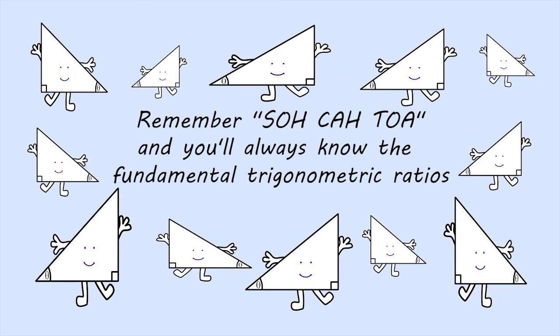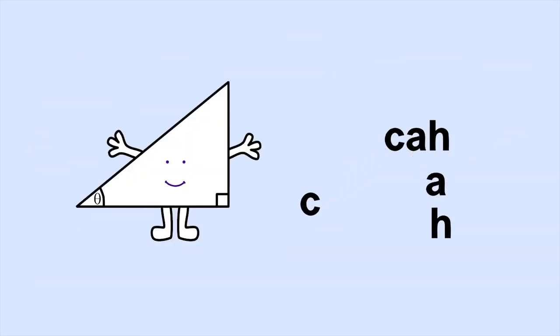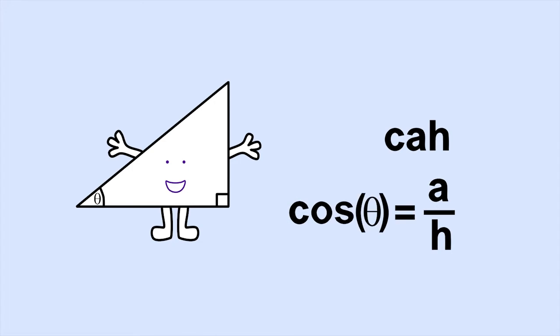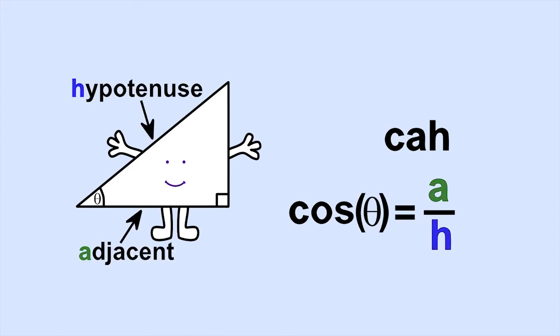CAH gives another ratio because adjacent over hypotenuse equals cos.